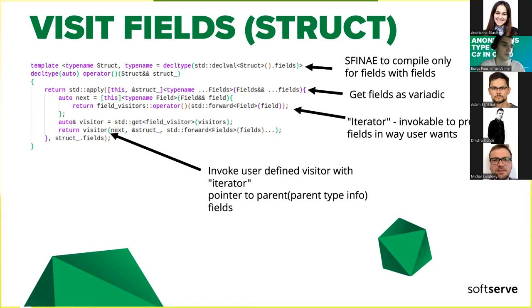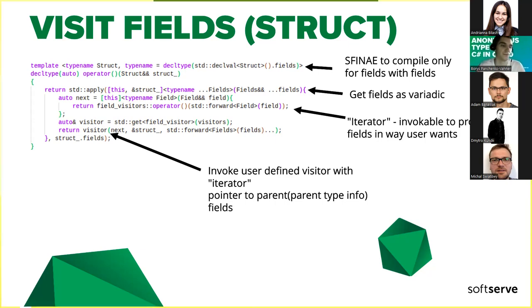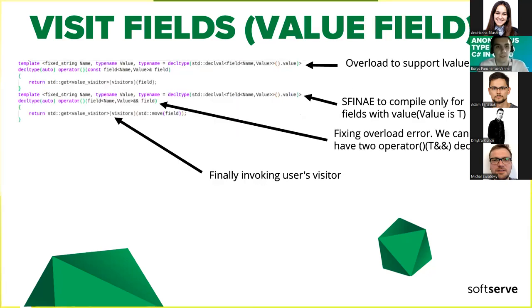If you have a field with a value, in JSON you just output the name in quotes, a colon, and the value. If you have a structure with fields, you output the parent name and iterate over all fields, putting commas between them. For the value case it's simpler — we just invoke the operator, pass the value through, and let the user do whatever they want, since you can't iterate further. That's why we don't need a 'next' iterator for the value case.